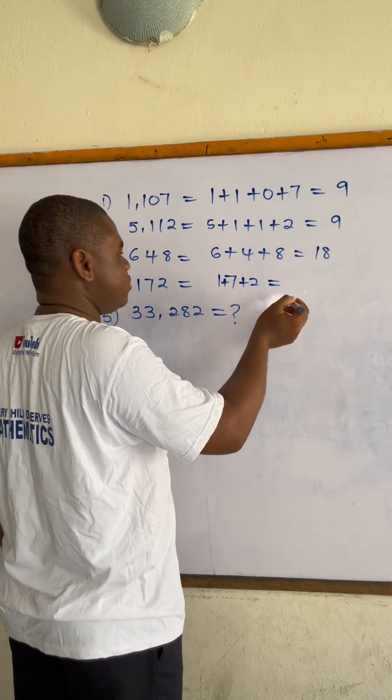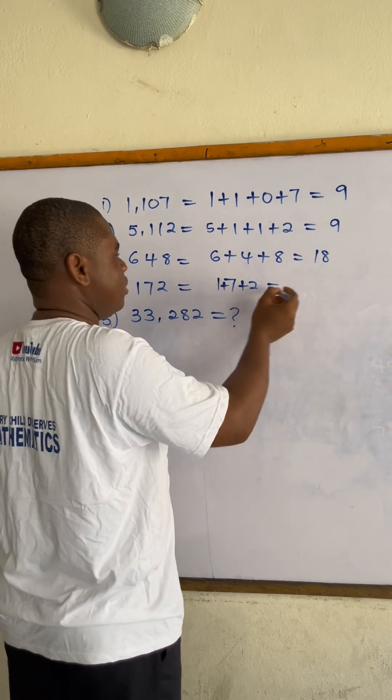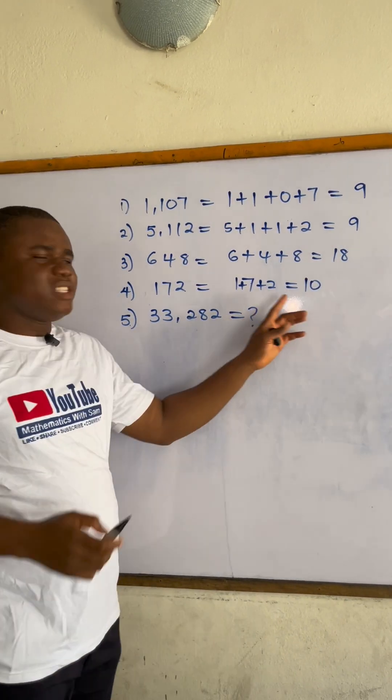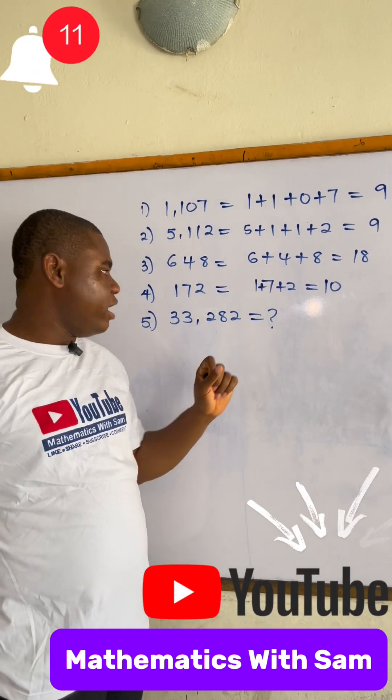2, which equals 10. This number is not divisible by 9 because 10 is not a multiple of 9.